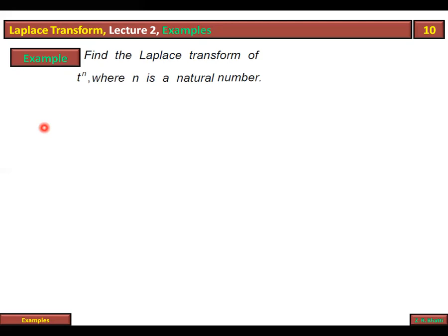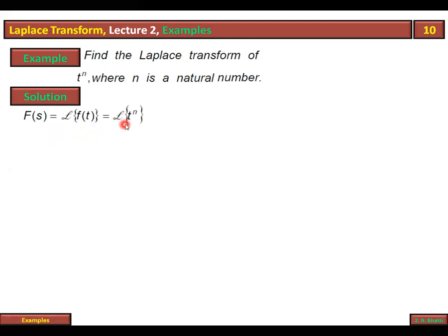Find the Laplace transform of t raised to the power n, where n is a natural number. لپلاس ٹرانسفارم کا فارمولا لکھتے ہیں: Laplace transform of f(t)، اس وقت f(t) = t^n ہے۔ لپلاس ٹرانسفارم کا فارمولا جو lecture 1 میں پڑھا تھا: 0 to infinity، e^(-st) × f(t) dt۔ f(t) اس وقت t^n ہے۔ اس کو integration by parts سے کرنا ہے — e^(-st) کو second function اور t^n کو first function رکھیں گے۔